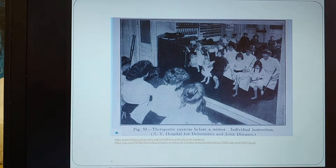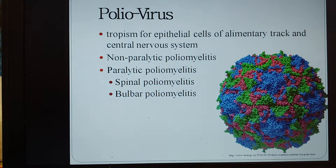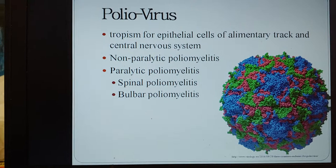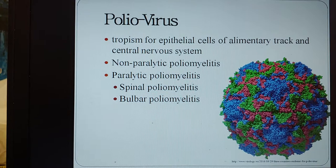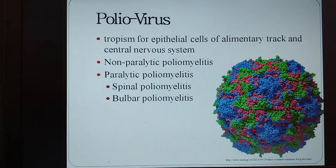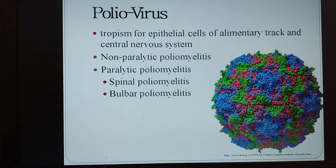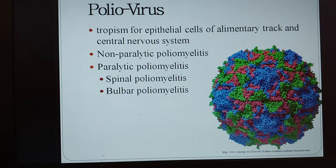Here is a picture showing nurses helping children that have polio, performing therapeutic exercises to work the muscles and regain some strength. The poliovirus has a tropism for epithelial cells of the alimentary tract and the central nervous system. It causes non-paralytic poliomyelitis and paralytic poliomyelitis. Non-paralytic can become paralytic, but paralytic is not always preceded by a minor illness, and when paralysis from polio occurs it is irreversible. Spinal poliomyelitis and bulbar poliomyelitis are subcategories of paralytic poliomyelitis — spinal involves paralysis of the spinal cord while bulbar involves paralysis of the brain stem.